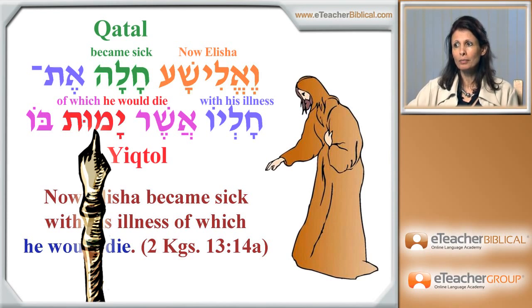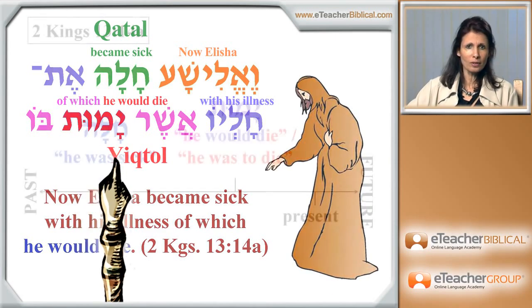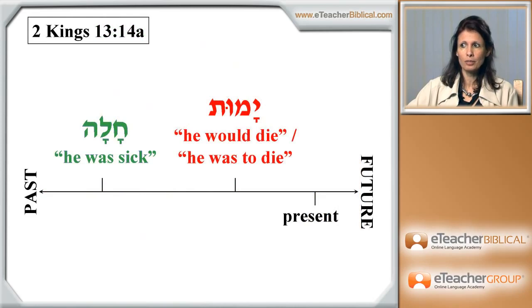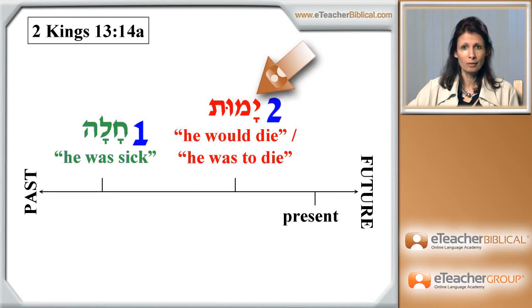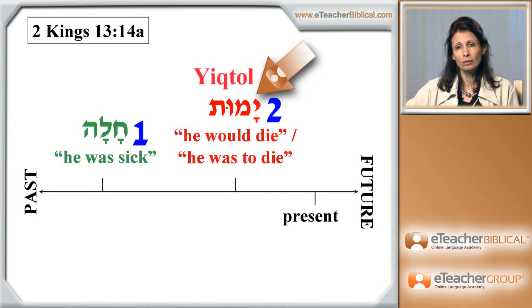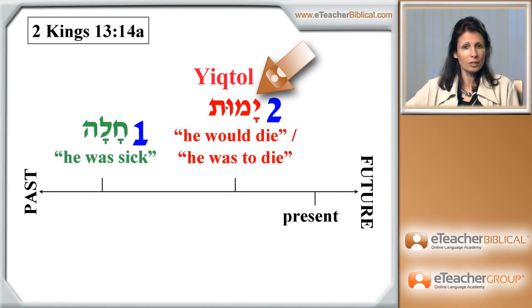Still, altogether, we are in the domain of the past. So what happened here? In order for us to understand it, let us go to the timeline that I present here for you. Both actions are done in the past — we are in the past domain — but we have one action that happened before the other. Elisha became sick, and only then he died. How can Hebrew express this difference in tenses when we have so very few verbal forms?